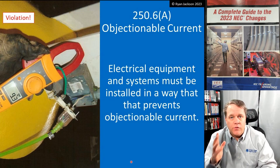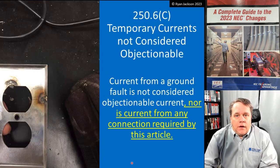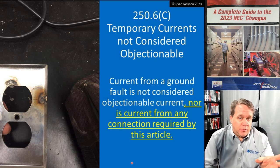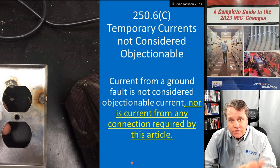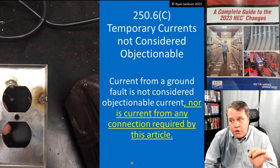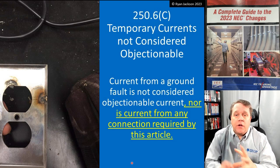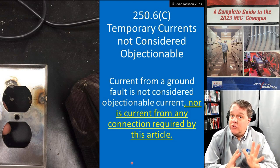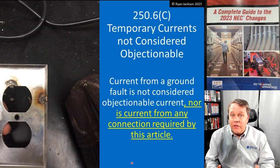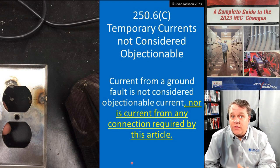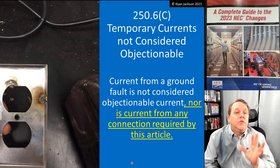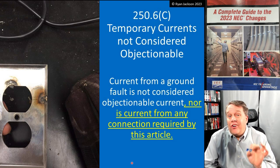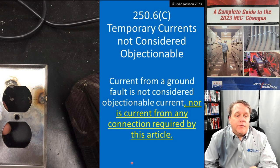Section 250.6(a) says you're not allowed to have objectionable current. Section 250.6(b) says if you have objectionable current, you need to disconnect equipment grounding conductors or disconnect the parallel paths. But it also says you're not allowed to just disconnect everything — you have to still ensure that the installation is safe. Now 250.6 also tells us what currents are not considered objectionable current.